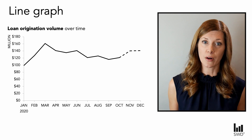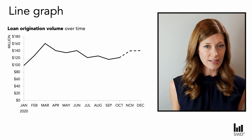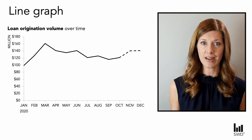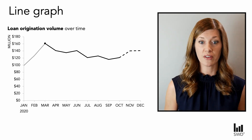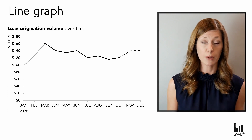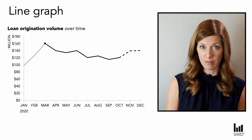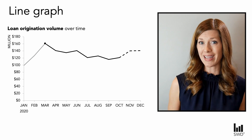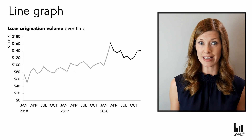Something else to consider when graphing data — and in particular when looking at data over time — is what frame of reference is important so that your audience interprets the data correctly. Here we get a little frame of reference simply from the historical data; we can see how monthly origination volume has varied over time. If I make one broad observation about this graph, it might be that there's been generally decreasing monthly origination volume since March. But notice how taking a broader view of time sets completely different context about how I interpret this data.